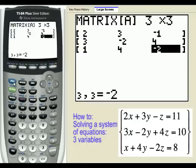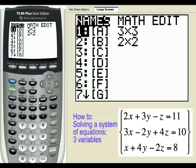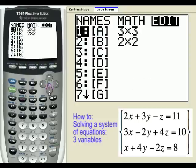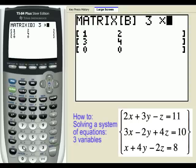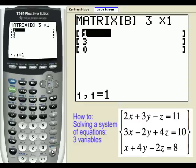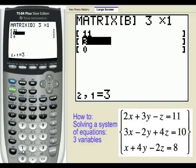Now the second matrix is going to be a 3 by 1. And those are going to be 11, 10, and 8.